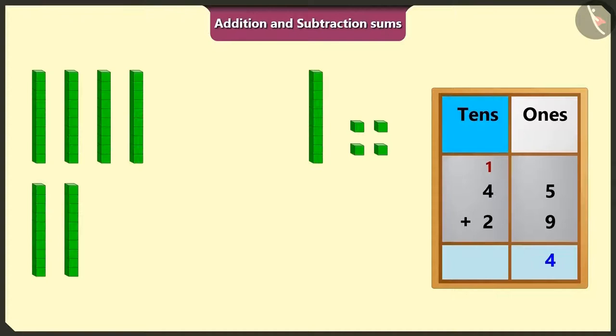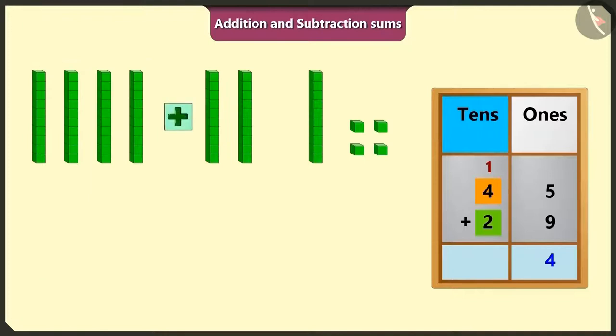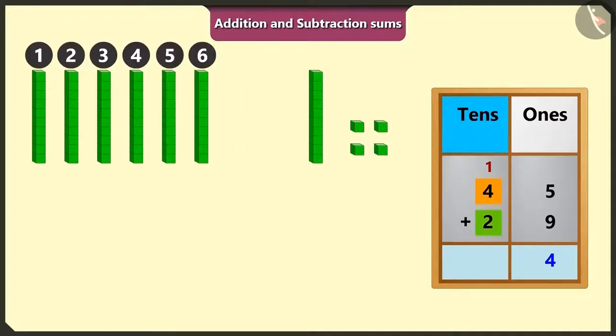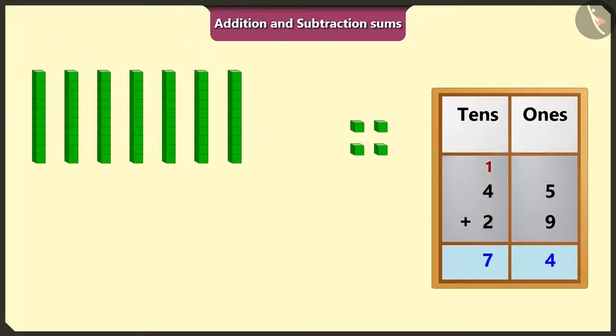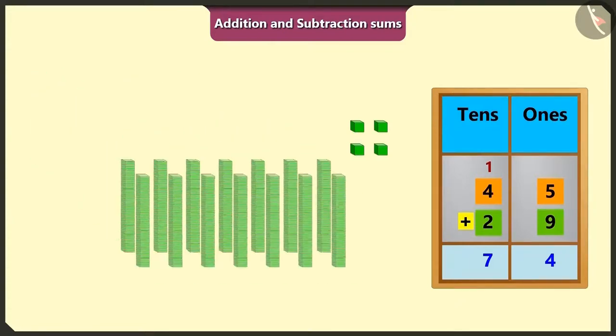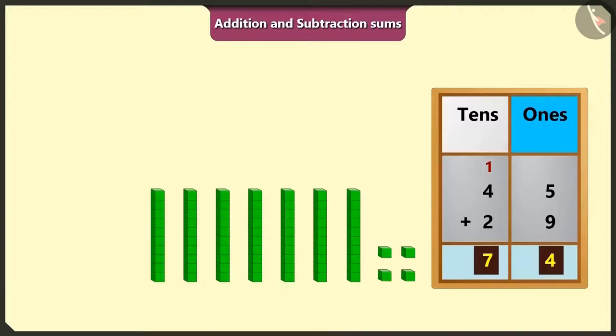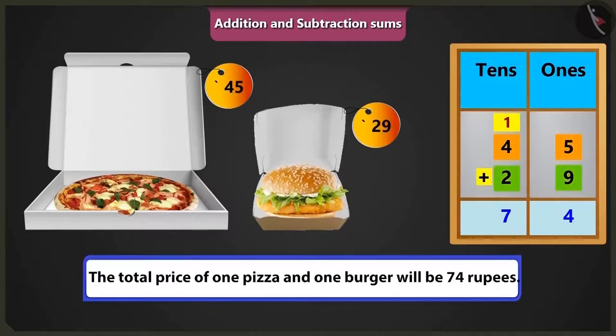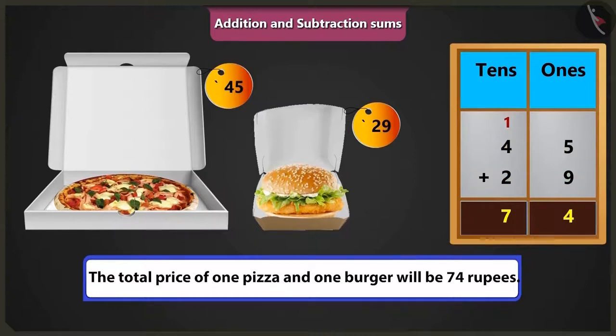Now, if we will add 2 tens in the bigger number, 4 tens in the box of tens, it will be 6 tens and if we will add 1 ten carry over in 6 tens, then it will be 7 tens. So, in this way, if we will add 29 rupees to 45 rupees, it will be 7 tens and 4 ones means 74 rupees. So, the total price of one pizza and one burger will be 74 rupees.